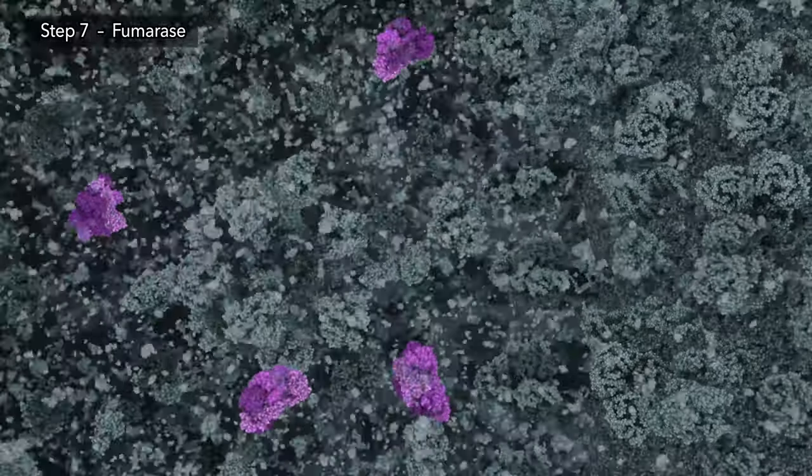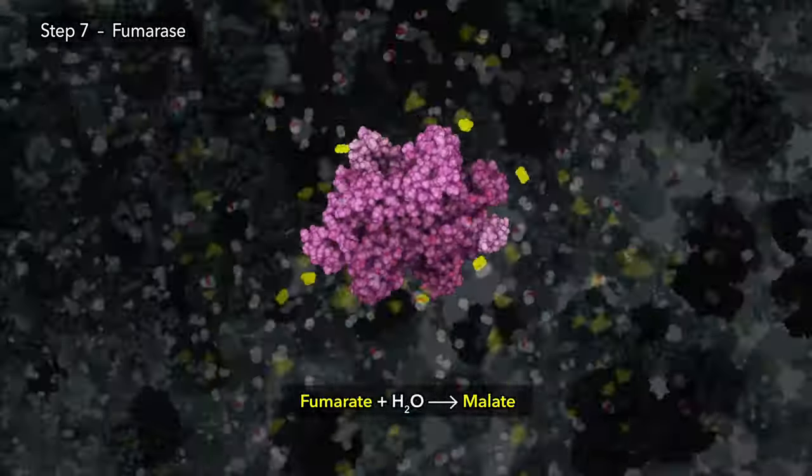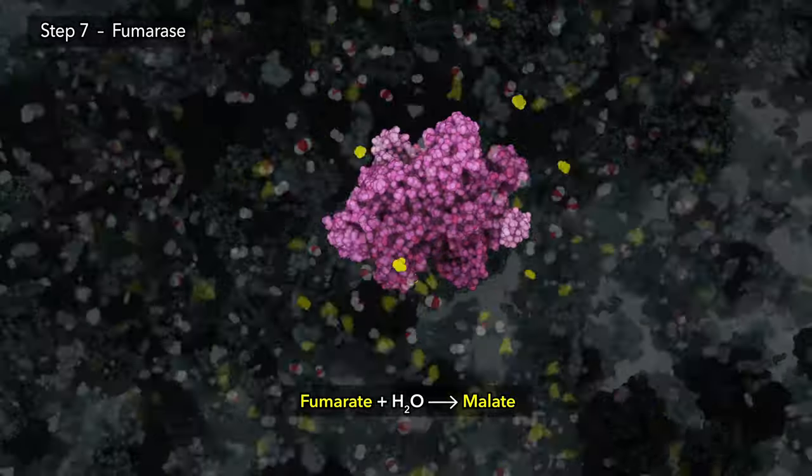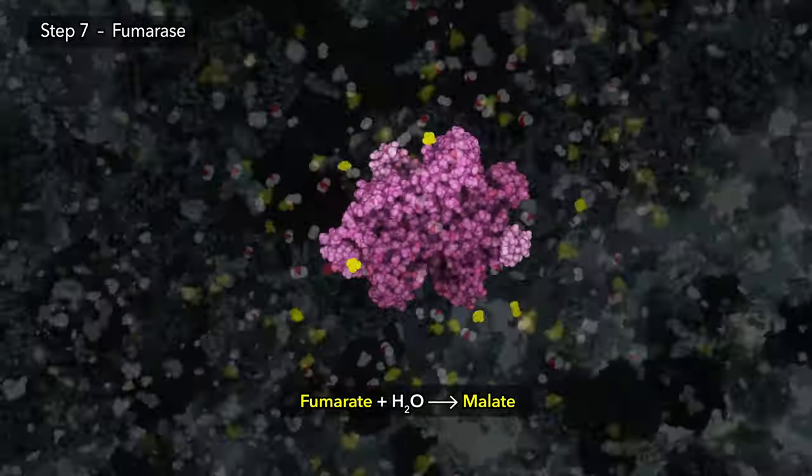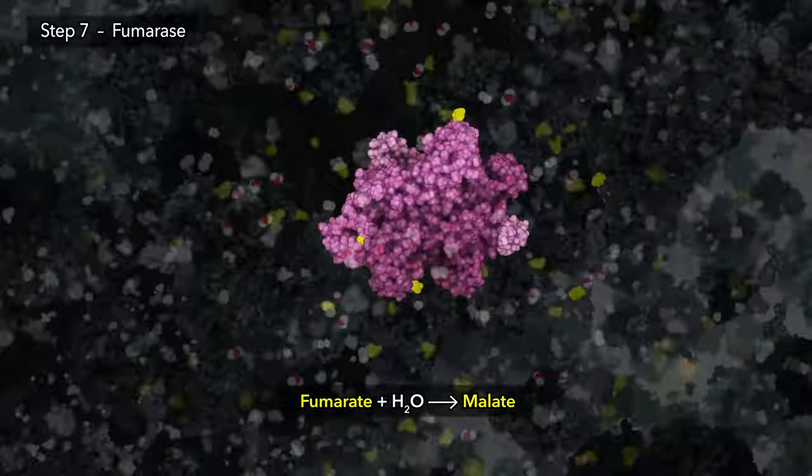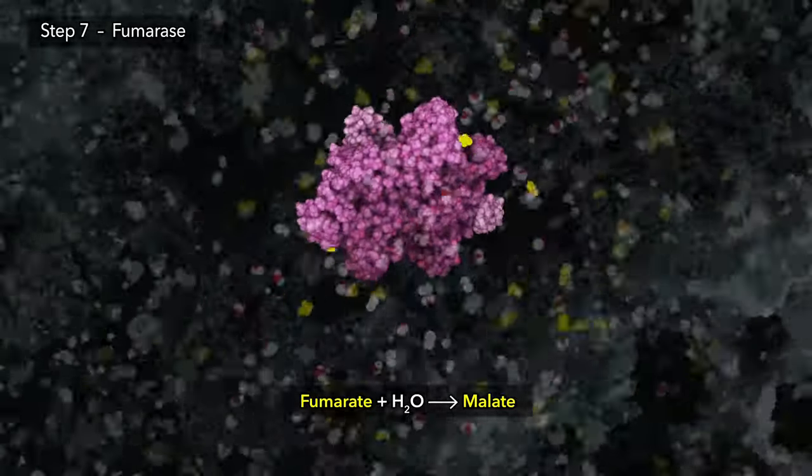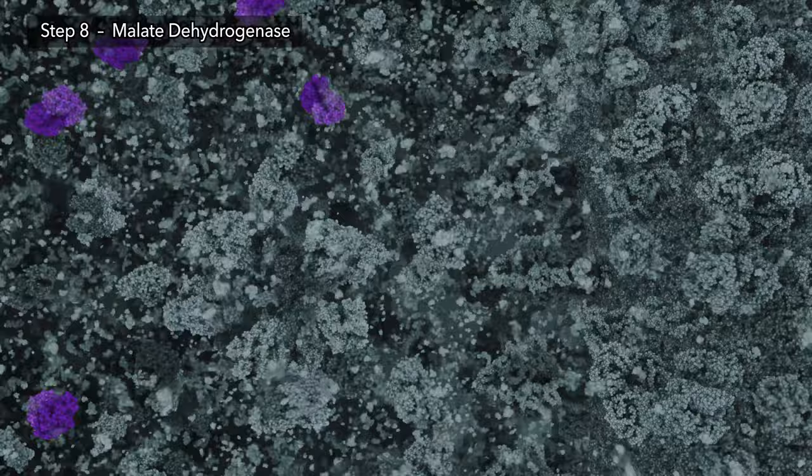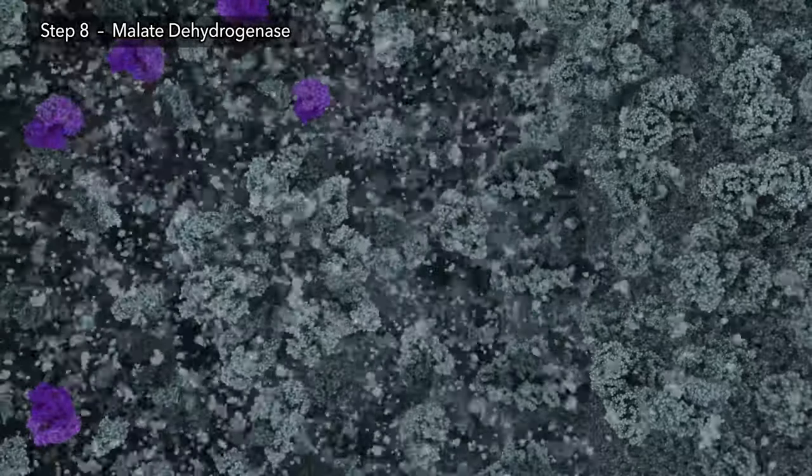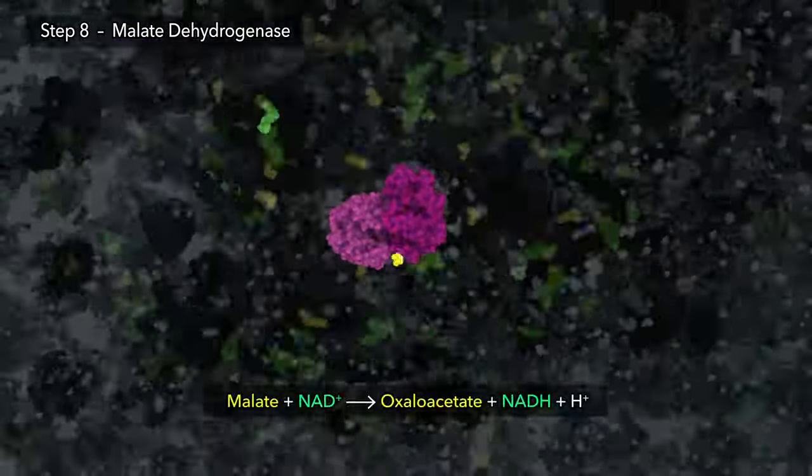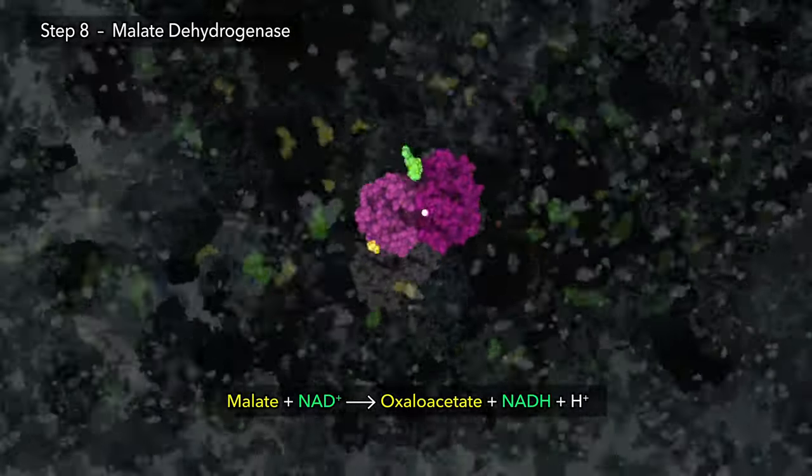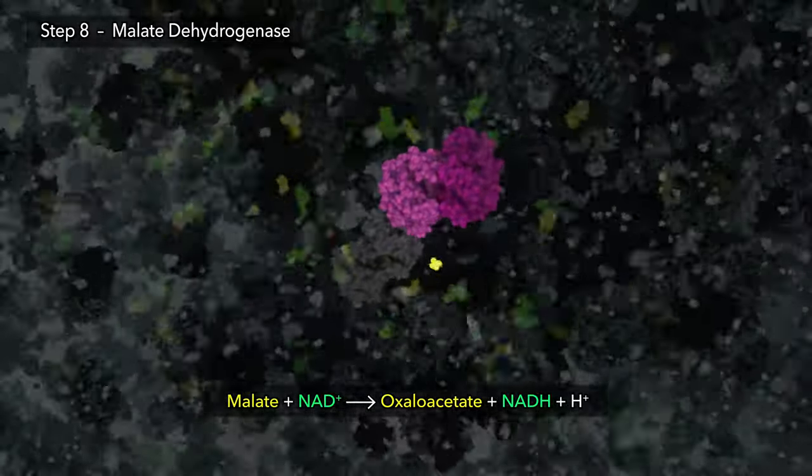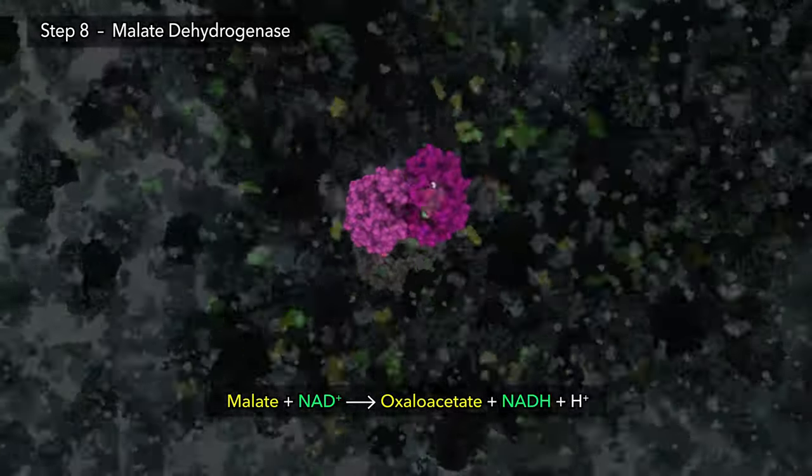Step seven takes fumarate, generated by step six, and reacts it with water to create four-carbon malate. The final step of the citric acid cycle uses malate to regenerate oxaloacetate, transferring electrons to coenzyme NADH, which supplies the electron transport chain.